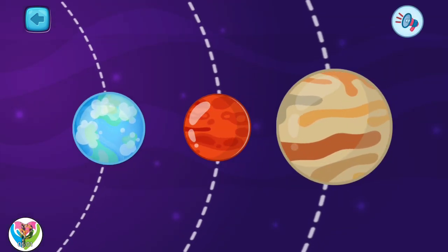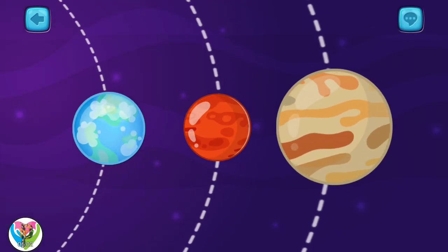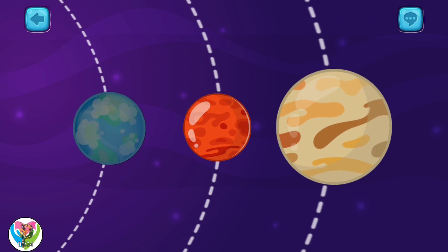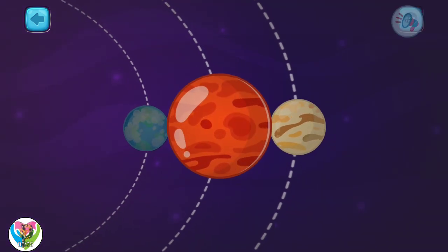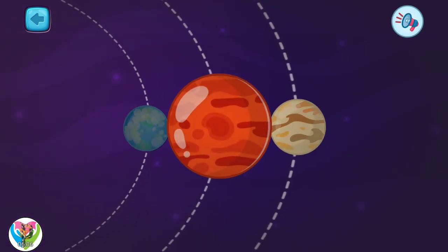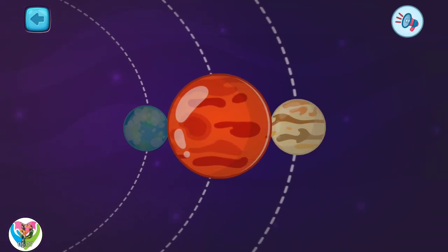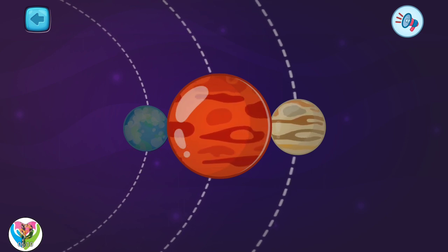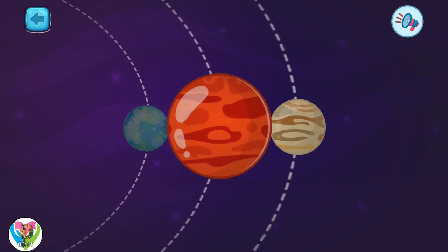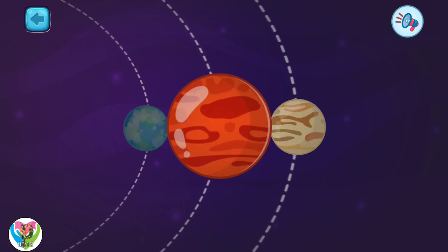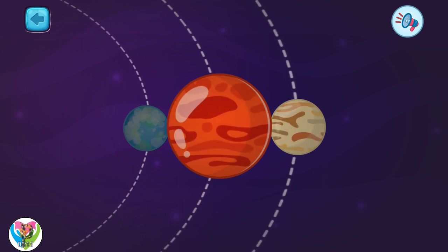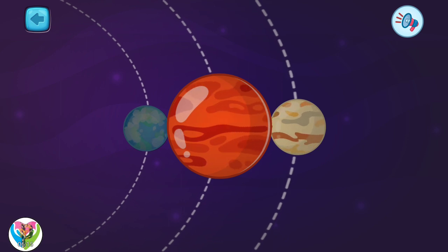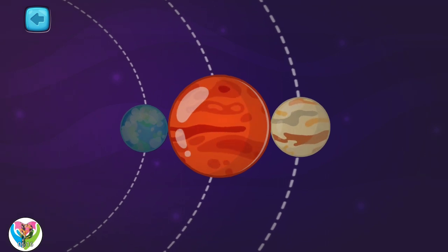Pick another one. This is the planet Mars. This is the fourth planet in the solar system. Mars is called the red planet because of the color of its surface.